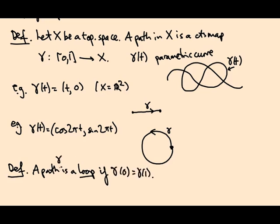A path gamma, and it's called a loop based at x if gamma(0) equals gamma(1) equals x. So in this case it's based at the point (1,0). Okay so that's what I mean when I talk about paths and loops.